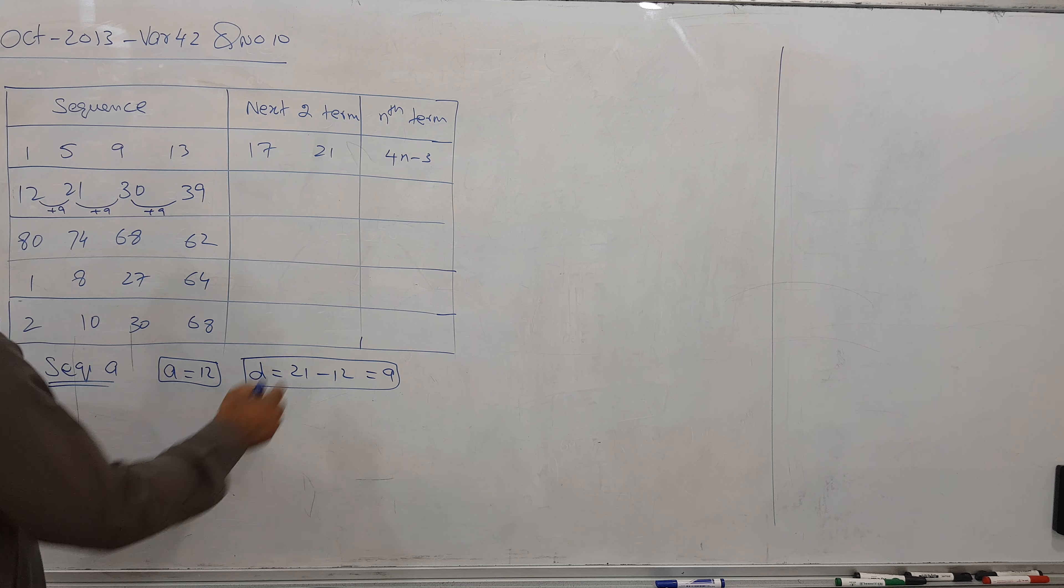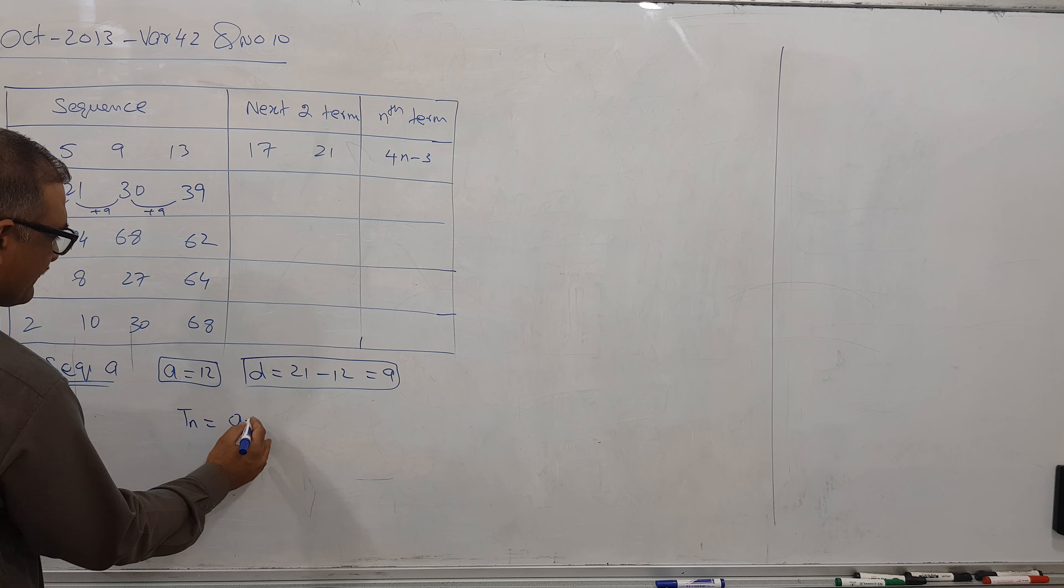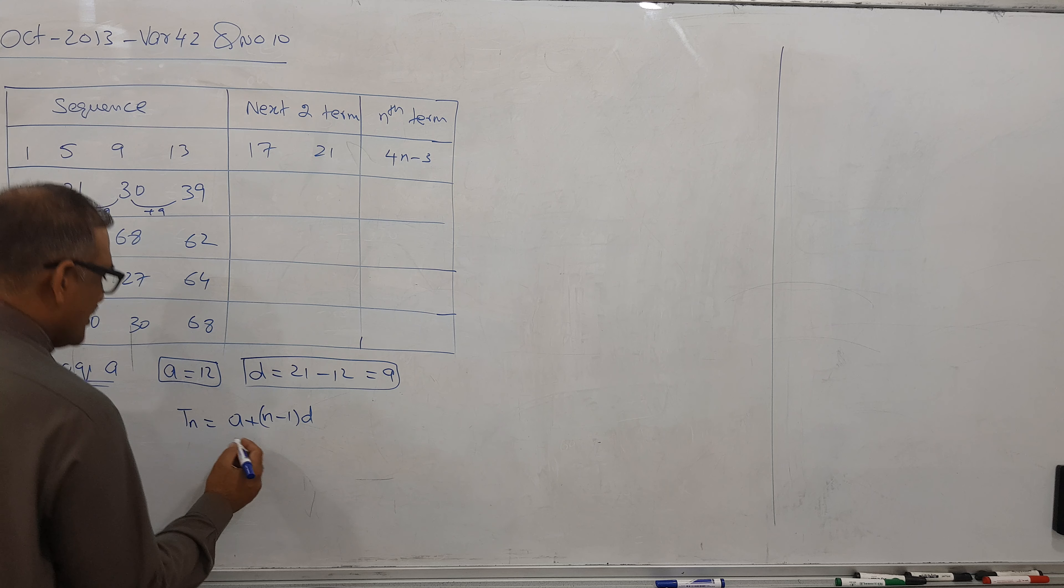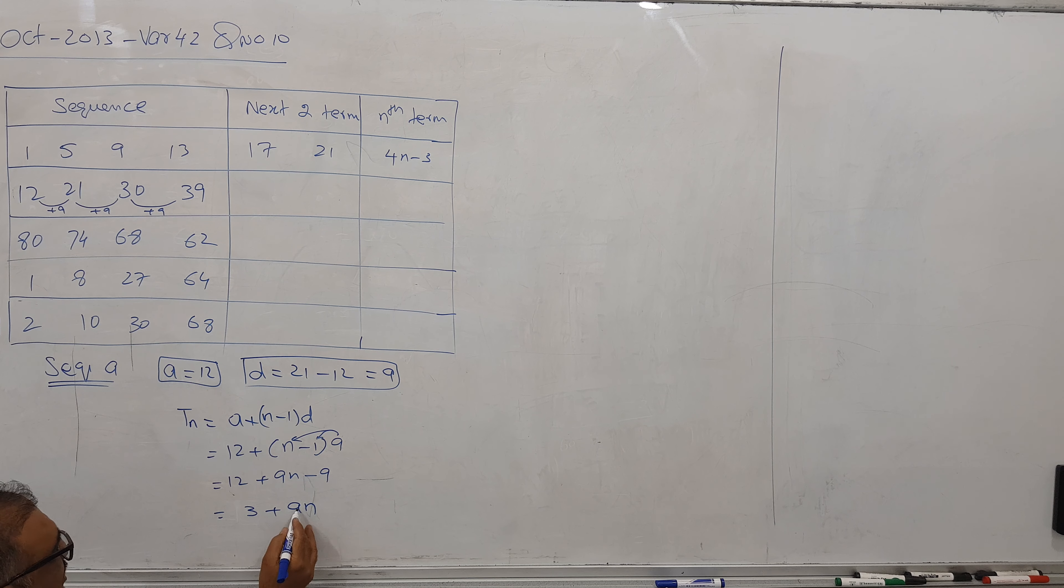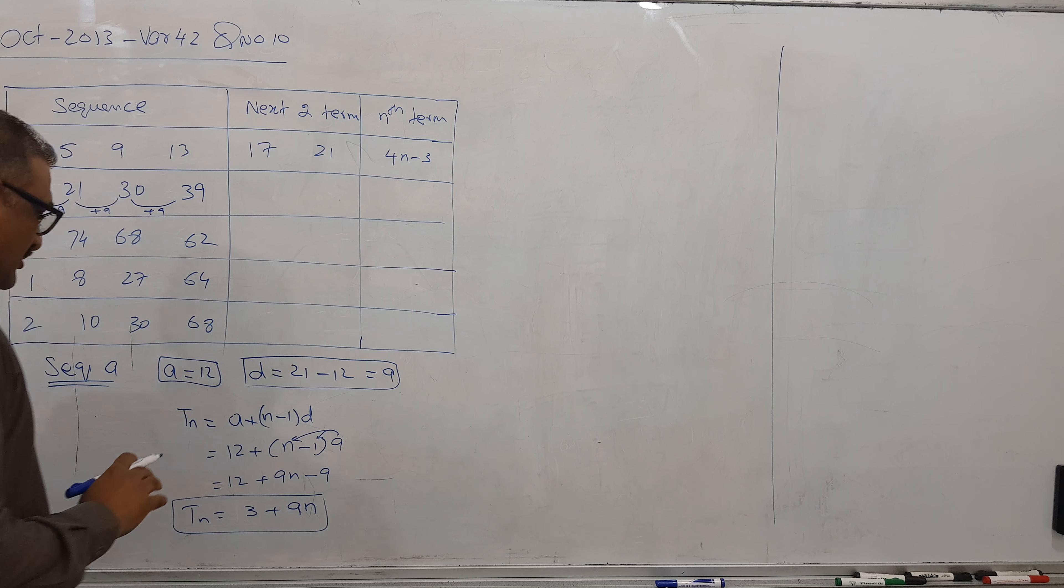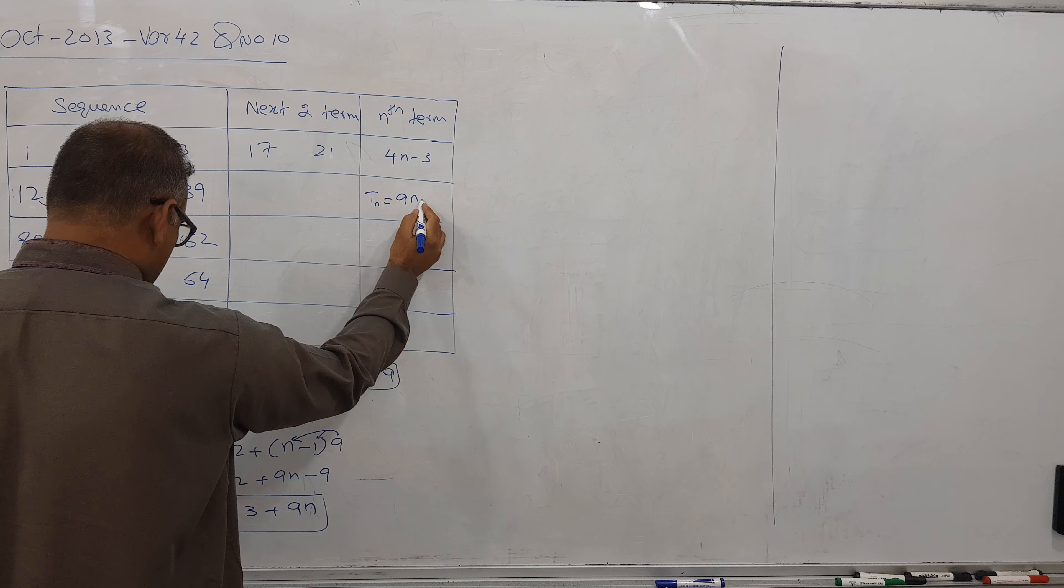Now I will go for the nth term formula, because it's arithmetic progression. The formula is a plus n minus 1 times d. In the place of a I will keep 12, and the difference is 9. 9 times n gives you 9n, and 12 minus 9 you got 3. So we got 9n plus 3. This is my nth term sequence. So Tn is equal to 9n plus 3.